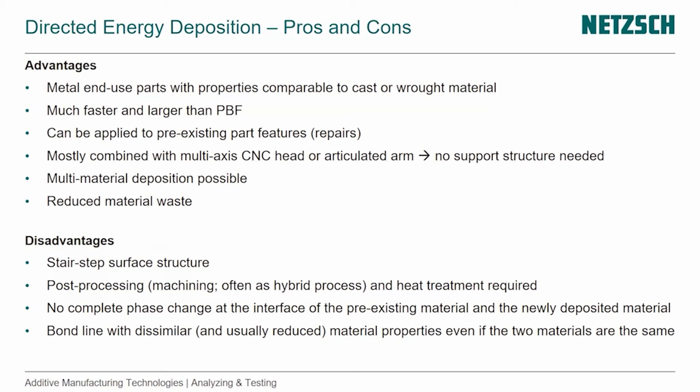Often, this machining is combined with the additive portion in a hybrid process, sometimes referred to as additive-subtractive manufacturing. We also need heat treatment afterwards. We don't get a complete phase change at the interface of the pre-existing material and the newly deposited material, and the bond line has dissimilar material properties — even if the two materials are the same — due to the temperature gradient and the way the process works.